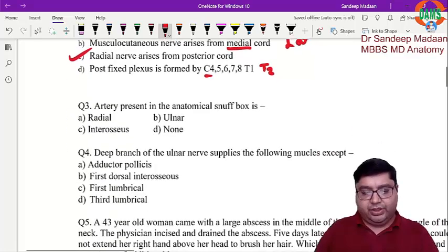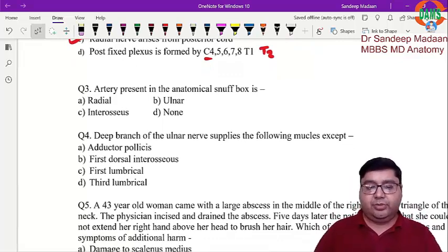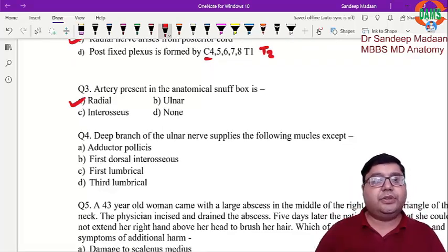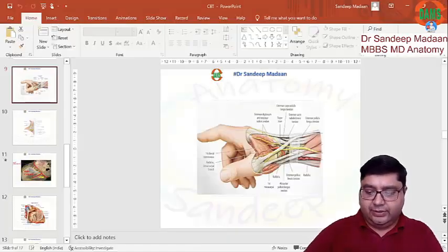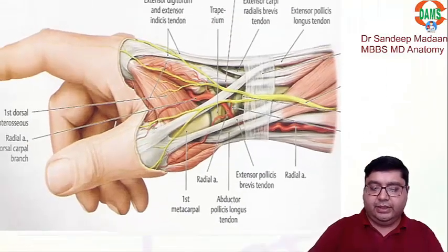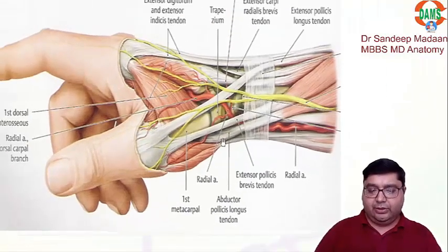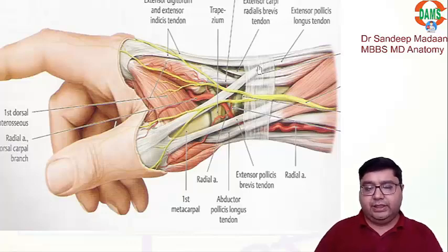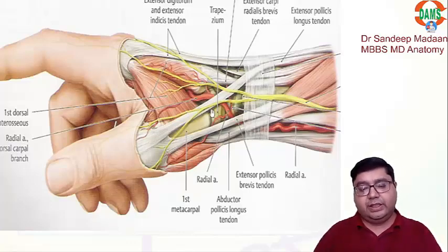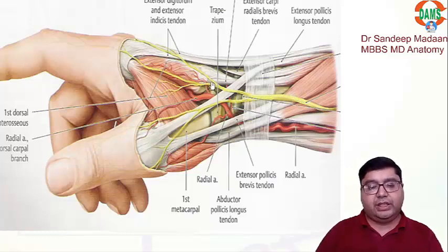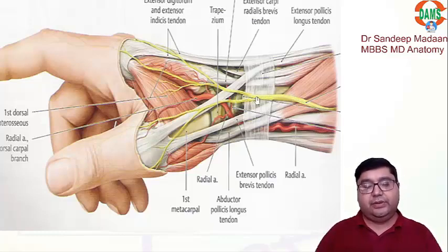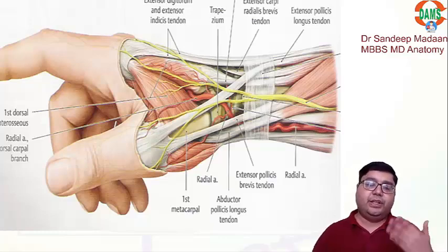Next question: the artery present in the anatomical snuffbox — straightforward answer is radial artery. In the diagram, abductor pollicis longus and extensor pollicis brevis make one boundary, the other boundary is made by extensor pollicis longus, and the content is the radial artery. In the roof we have the cephalic vein and the superficial branch of the radial nerve.